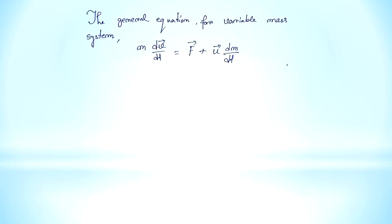The general equation for variable mass system is m dv/dt = F + u dm/dt. We write the equation for our system as m dv/dt = F - v dm/dt, as u equals minus v.